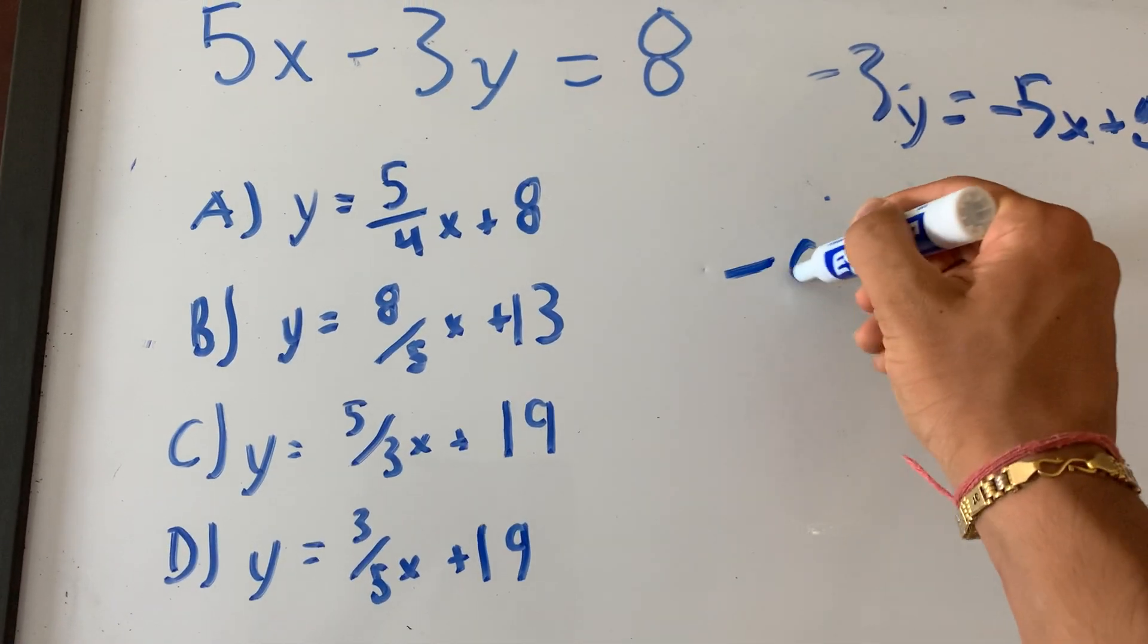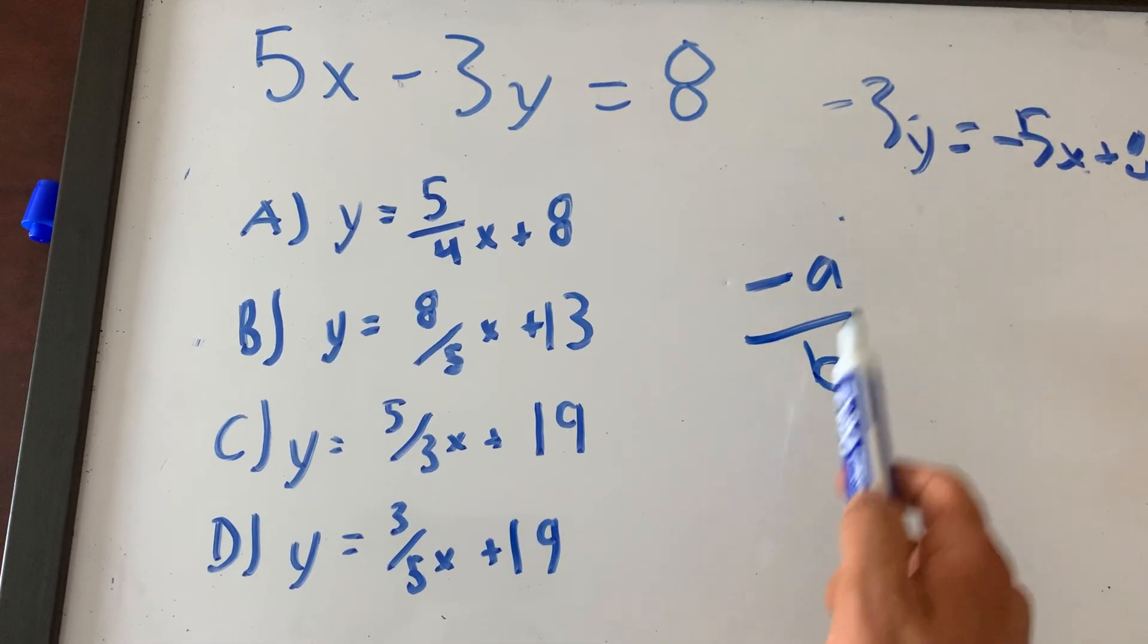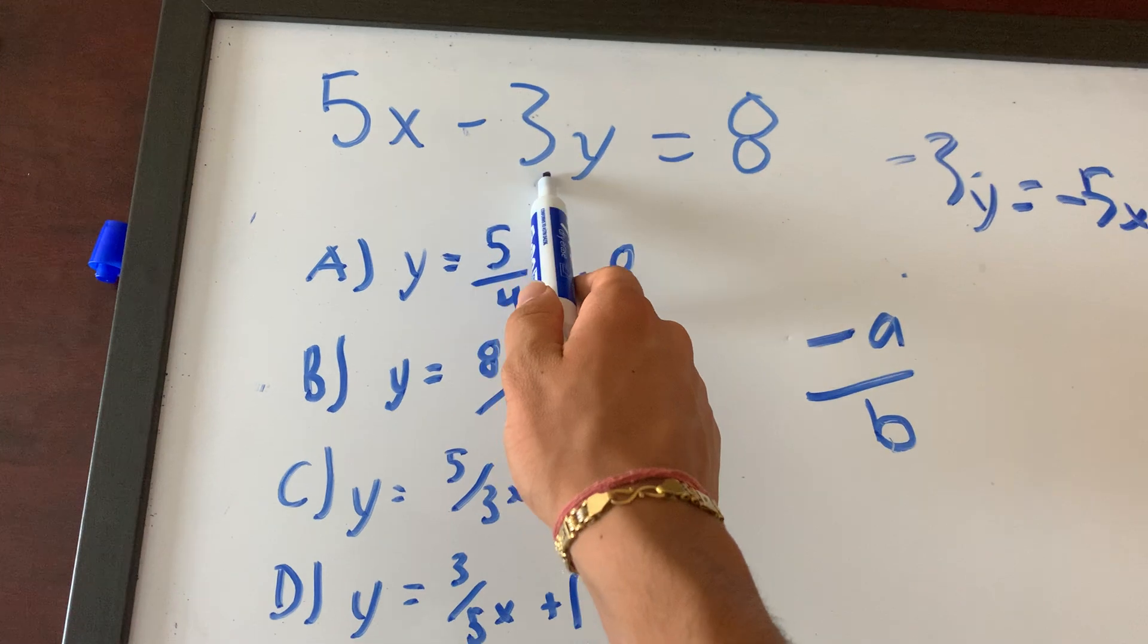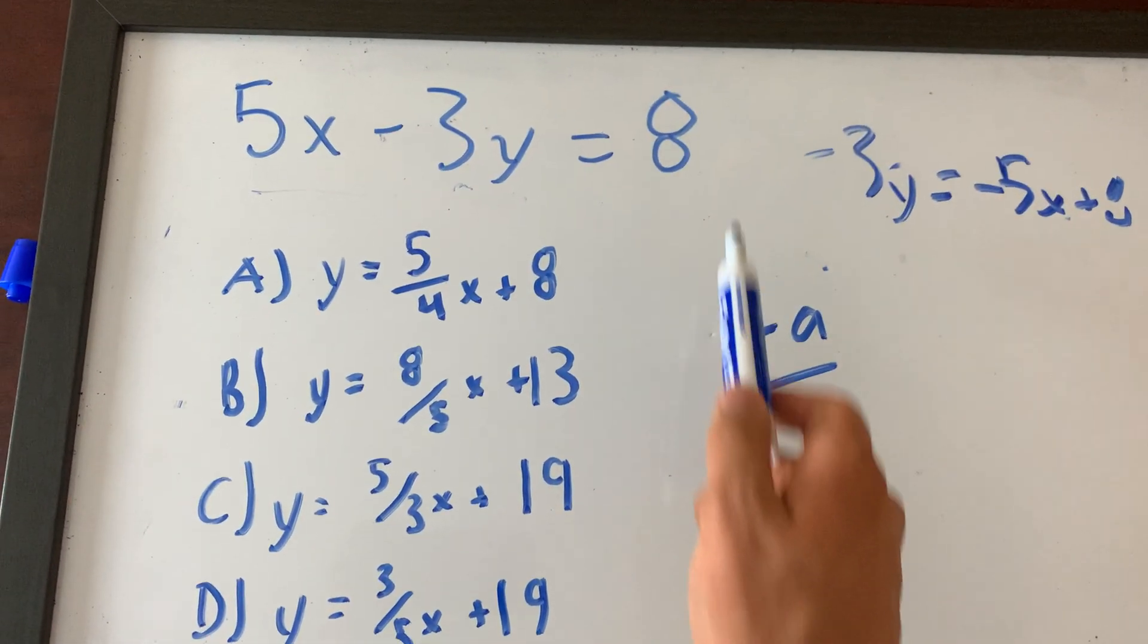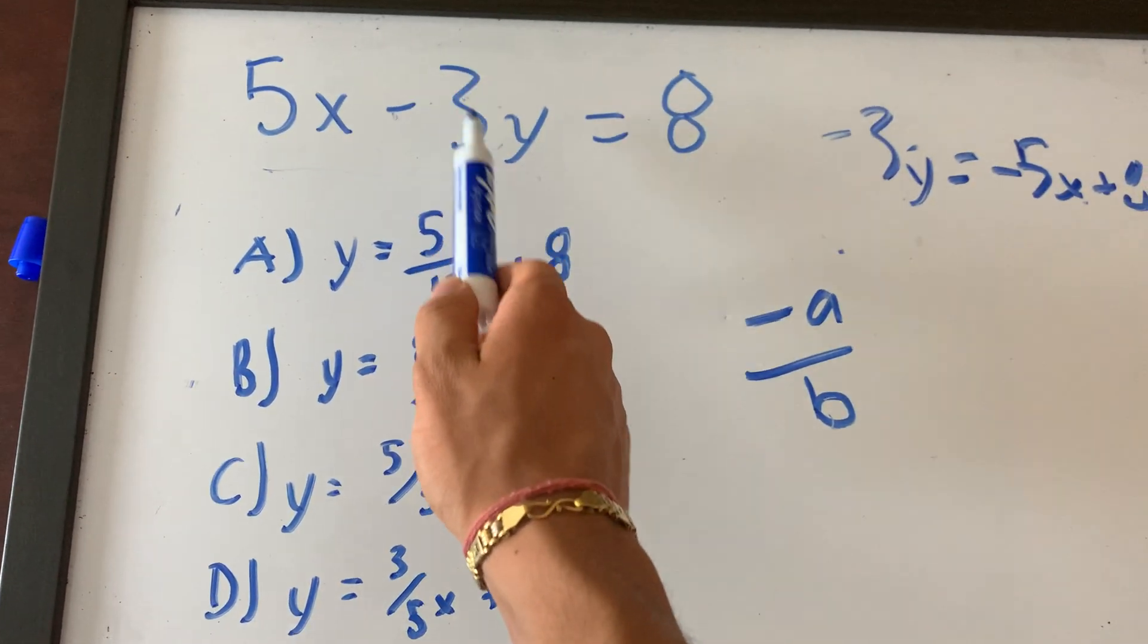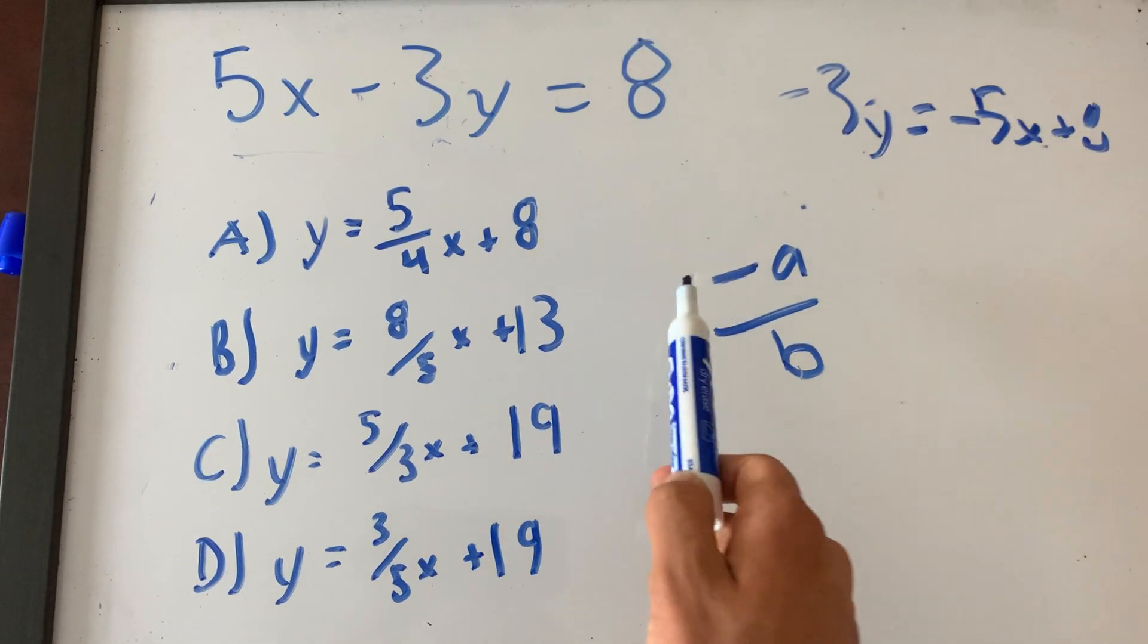That trick is negative a over b. Negative a over b will give you the slope of a standard equation. This is a standard form, right? This is slope-intercept form, this is standard form. To find the slope using the standard form without having to convert to y-intercept form, all you do is negative a over b.